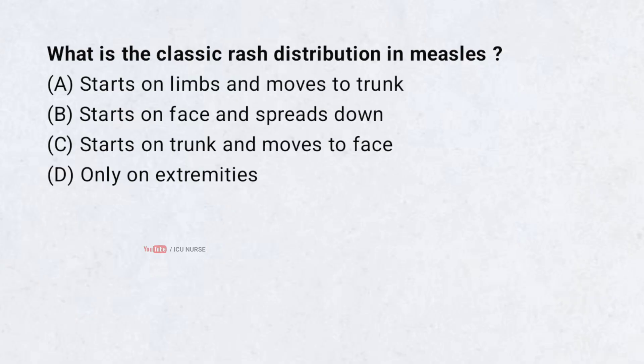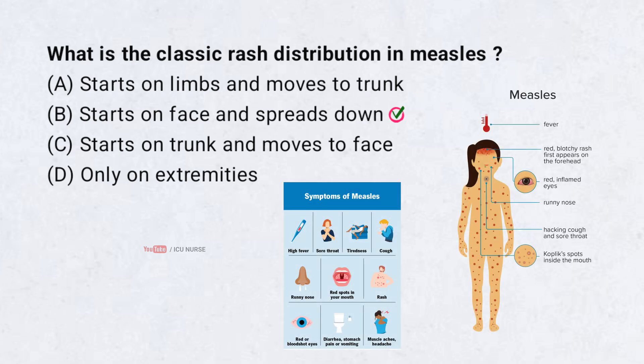What is the classic rash distribution in measles? A. Starts on limbs and moves to trunk, B. Starts on face and spreads down, C. Starts on trunk and moves to face, D. Only on extremities. Correct answer: B. Starts on face and spreads down. The measles rash usually begins behind the ears and along the hairline before spreading downward. The rash is caused by the immune system attacking virus-infected cells in the skin. The downward spread follows the pattern of the virus moving through the bloodstream. The face develops the rash first because it has a rich supply of blood vessels.